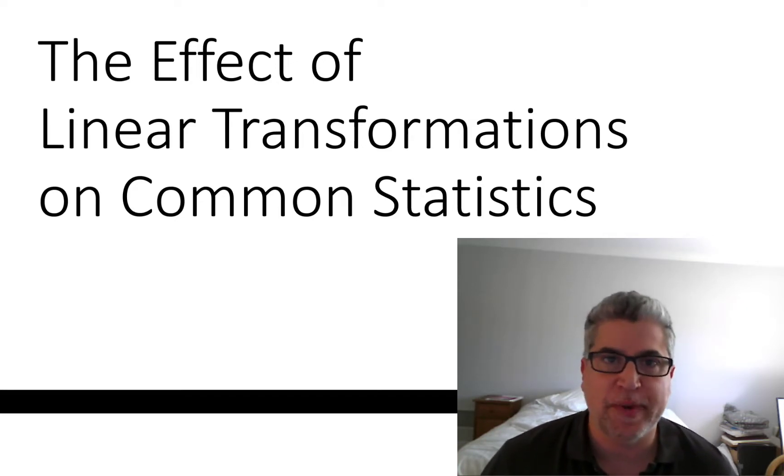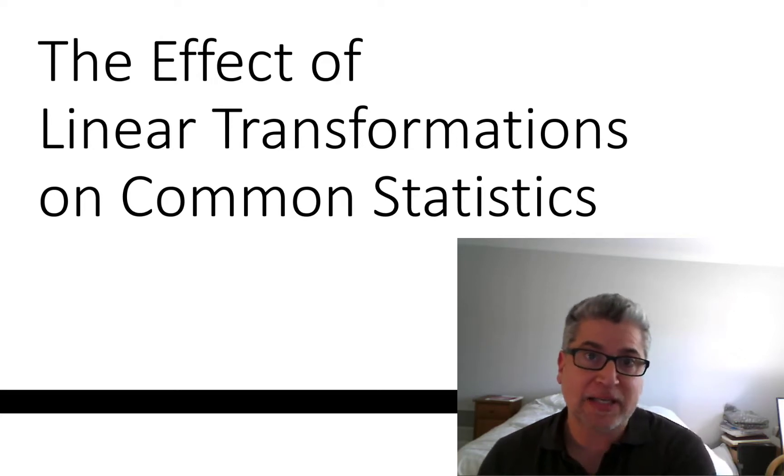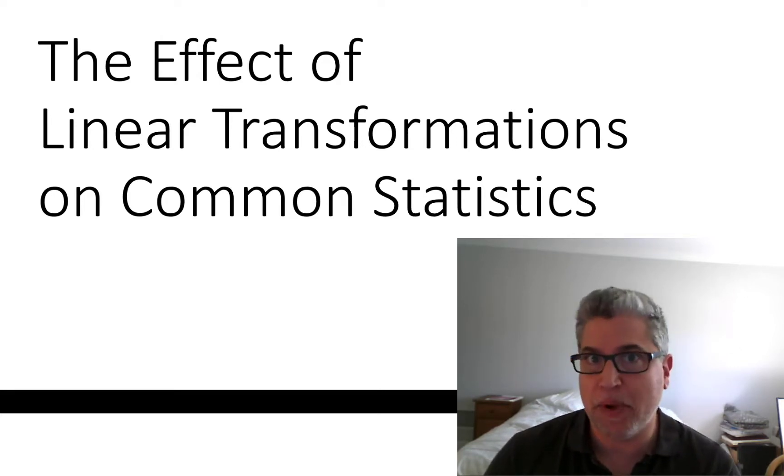What I mean by linear transformation is you've got some data, let's say it's in Fahrenheit, and you need to convert it into Celsius. That usually involves adding something and multiplying by something. The bread and butter of a straight line is the intercept and the slope, a plus mx, so you're adding something and multiplying something to get your new variable.